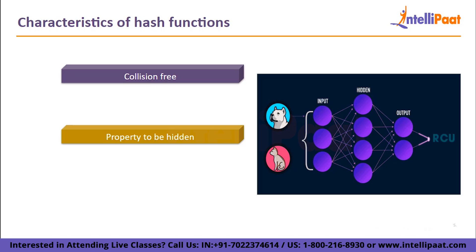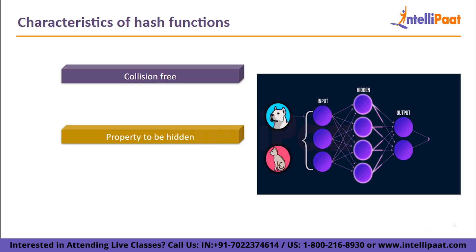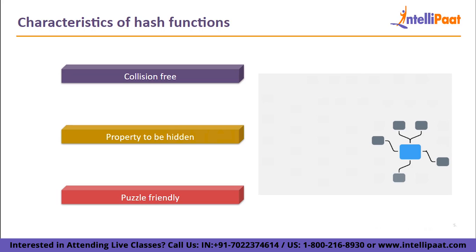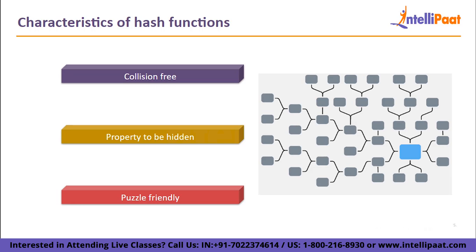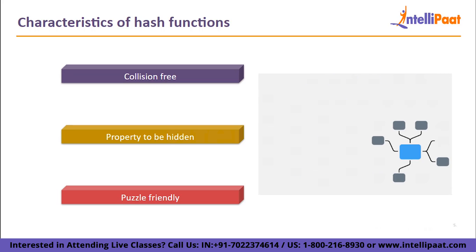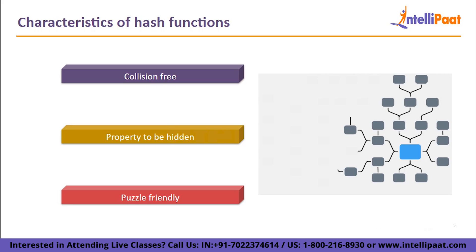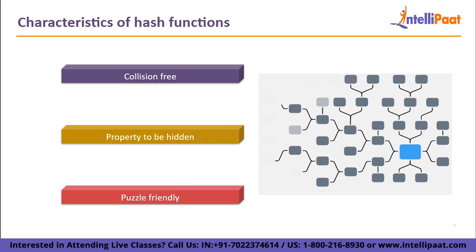All potential output values should be equally distributed. As a result, each possible input will have a distinct output and the outputs will be distributed equally across the range of potential values. Lastly, puzzle friendly. Hash functions should be acceptable for puzzles so that they can be used in them. It should be difficult to choose an input that will produce a specific outcome. Determining the input from a range that is as diverse as is practical is therefore recommended.